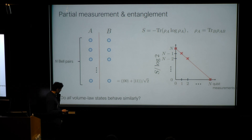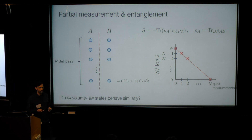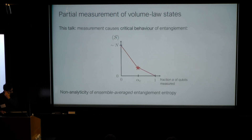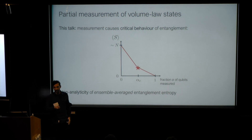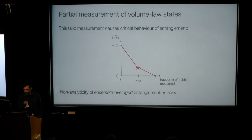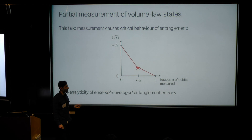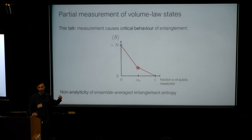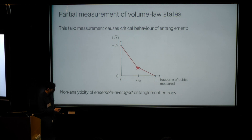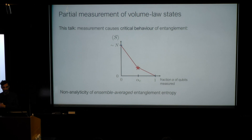I can pose the question: do all volume law states behave this way, or are there states for which this procedure gives something qualitatively different? What I want to show in this talk is that there are. I want to show an example of volume law states where measuring qubits one by one leads to a non-analyticity of the entanglement entropy. In this setting, we look at the ensemble-averaged entanglement entropy, and there is a non-analyticity associated with criticality — we go through a phase transition as we measure the qubits.